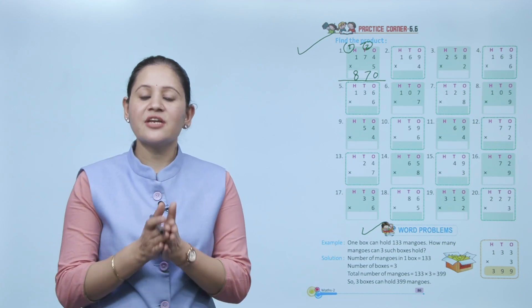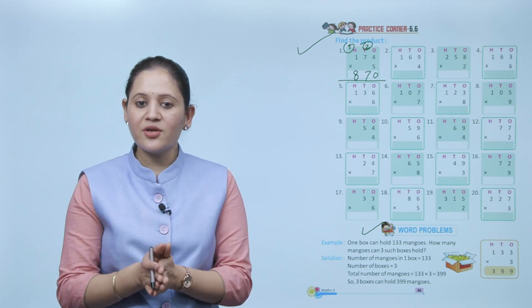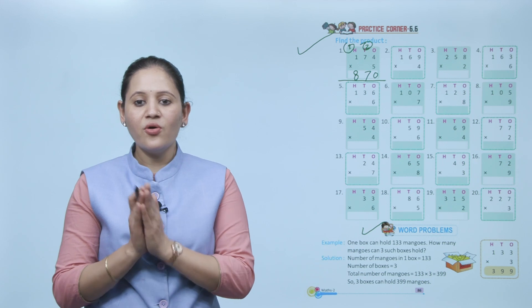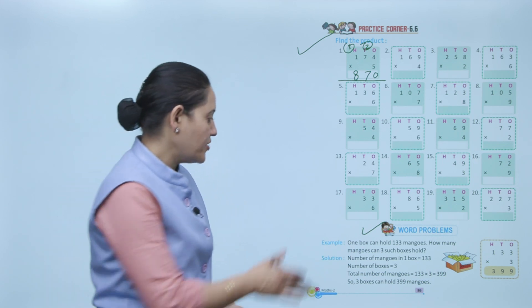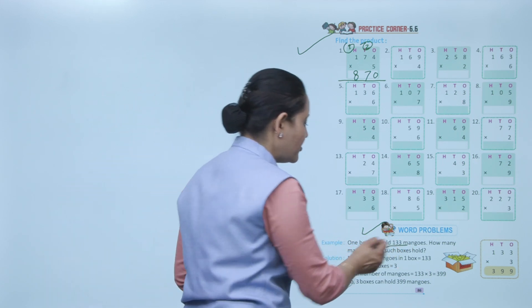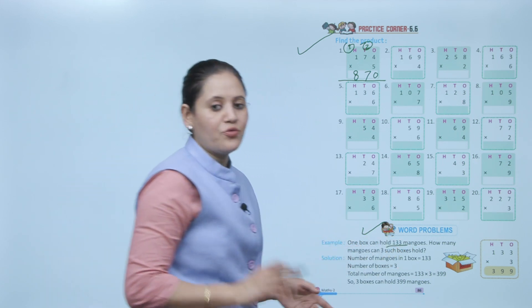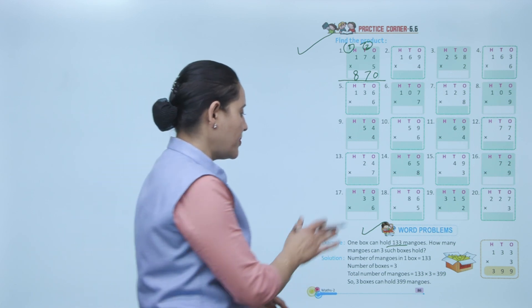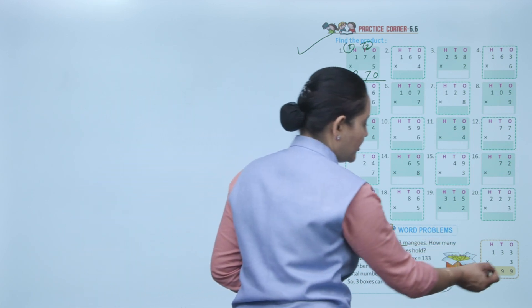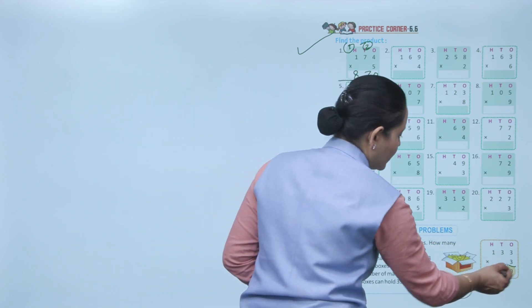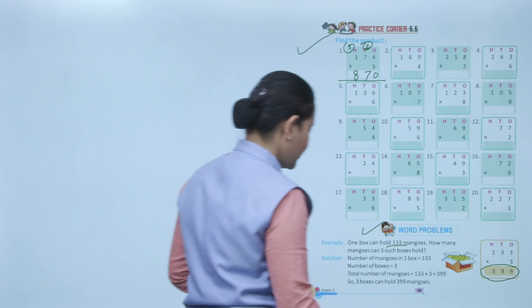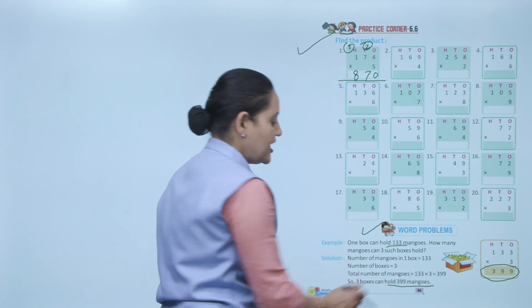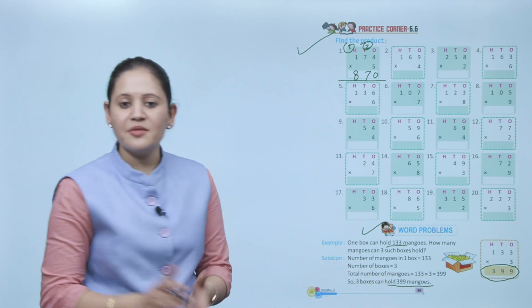Word problem: One box can hold 133 mangoes. How many mangoes can 3 such boxes hold? In one box there are 133 mangoes, so multiply 133 by 3. The total is 399. So 3 boxes can hold 399 mangoes.